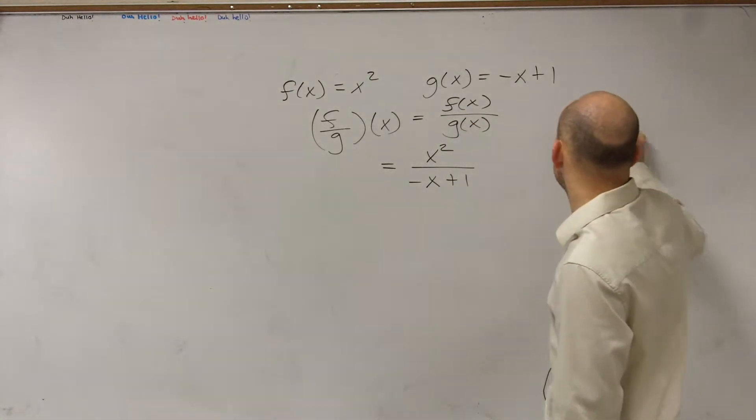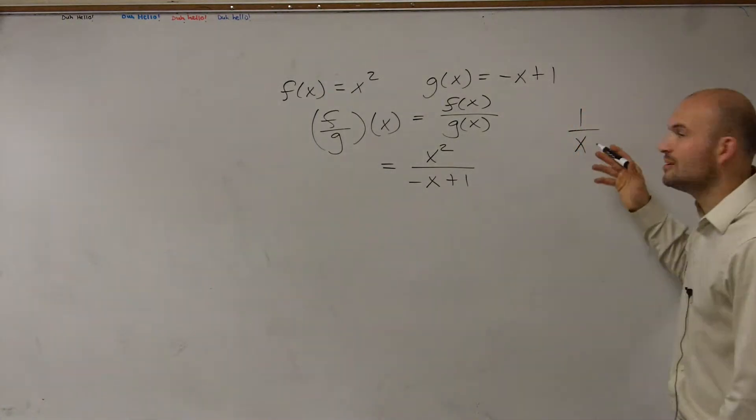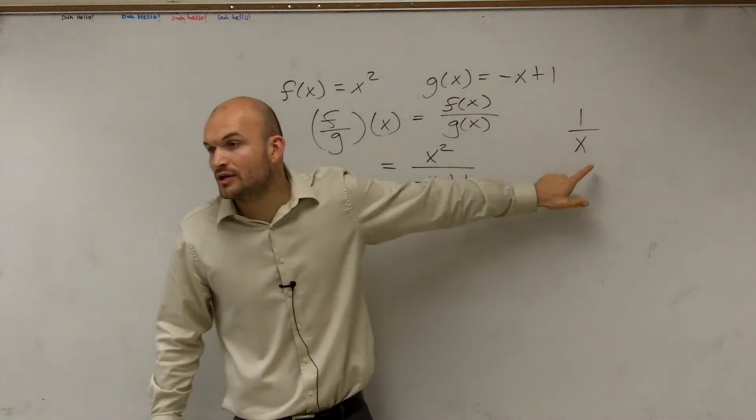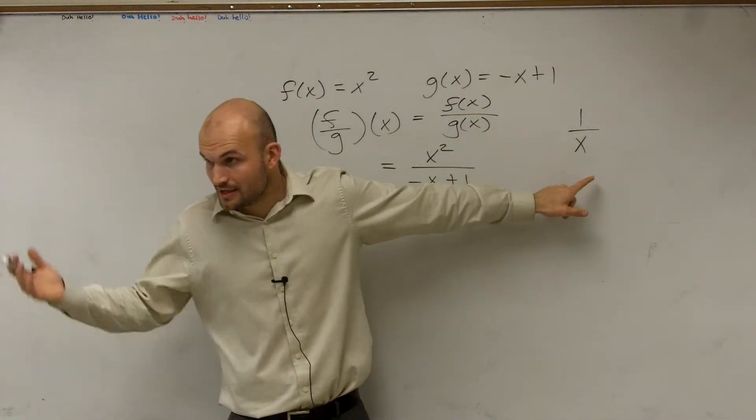The only number, if I was going to say 1 divided by x, the only number that x cannot be is going to be what, Nick? In this equation, what is the only number x cannot be? Zero. Thank you.